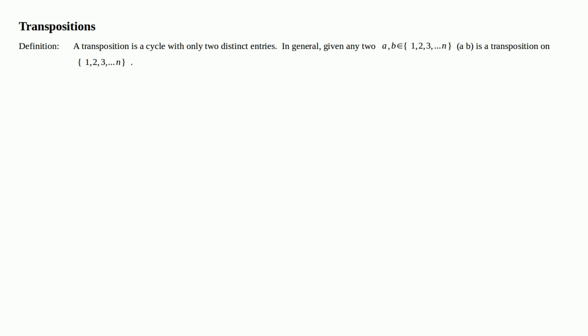Okay, we're going to continue our discussion of permutations and cycles by introducing a particular kind of cycle called a transposition. So the definition of a transposition: a transposition is a cycle with only two distinct entries. In general, given any two a and b in the set 1 through n, the cycle (a b) is a transposition on the set 1 through n.